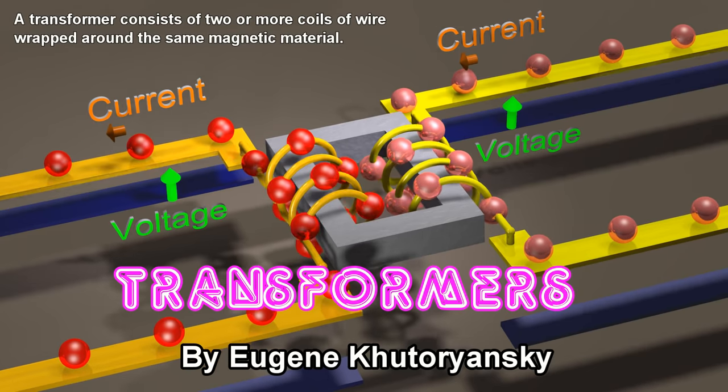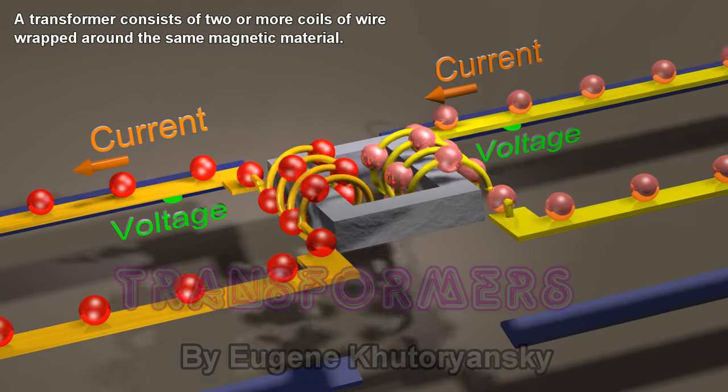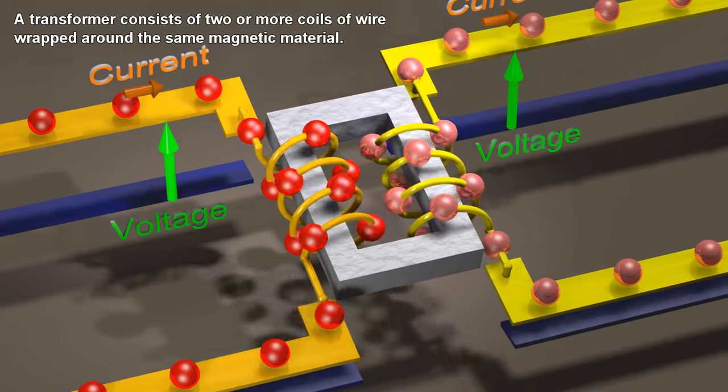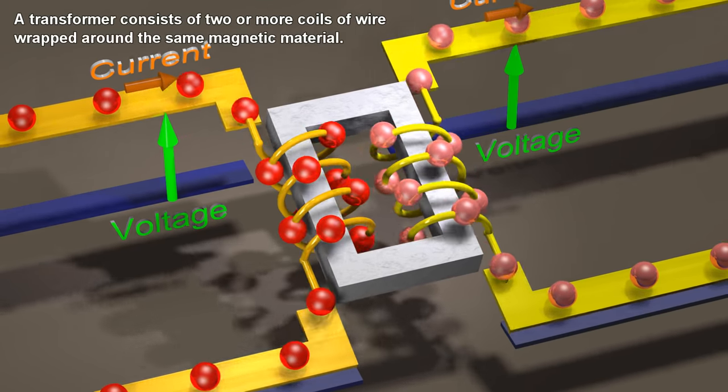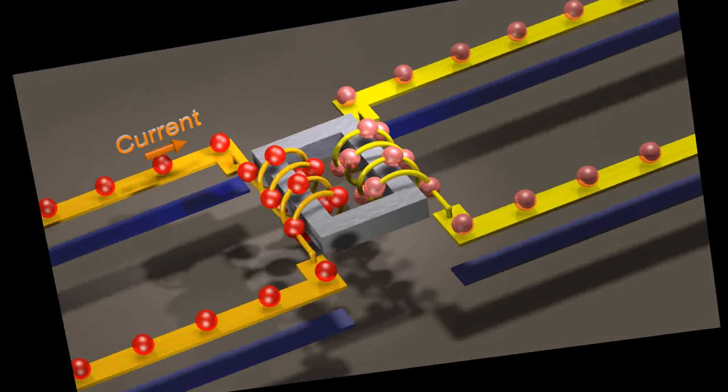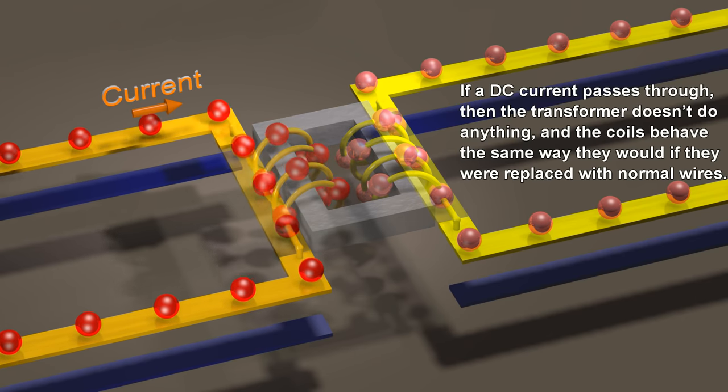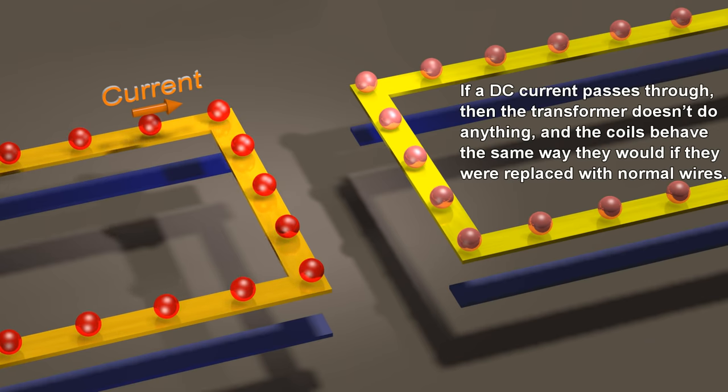A transformer consists of two or more coils of wire wrapped around the same magnetic material. If a DC current passes through, then the transformer does not do anything, and the coils behave the same way they would if they were replaced with normal wires.